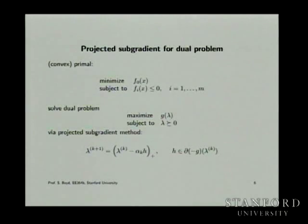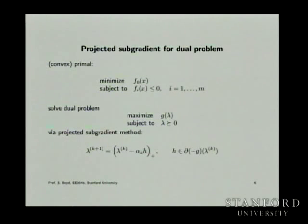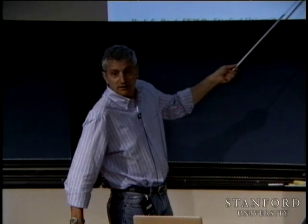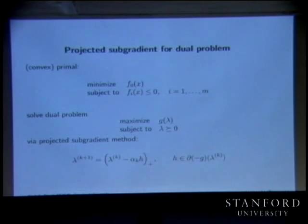We have a primal problem: minimize F0 subject to Fi less than 0. We form the dual problem, which is to maximize the dual function at lambda. These are Lagrange multipliers lambda, which have to be non-negative because these are inequality constraints. The projected subgradient method is very easy because we're maximizing this concave function subject to the constraint that lambda is in the non-negative orthant.